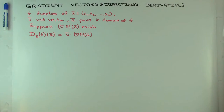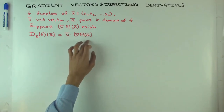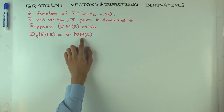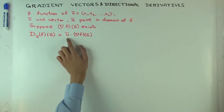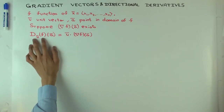How can we interpret this dot product? The gradient vector represents in some sense the overall direction and magnitude of change of f at the point a. We are interested in the component of that change which is along the unit vector u. To take the component of a vector along a unit vector, you can just take the dot product with the unit vector, and that component describes the directional derivative.